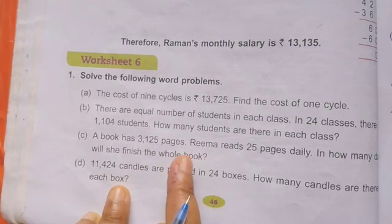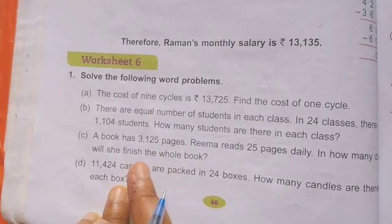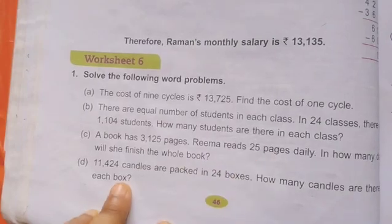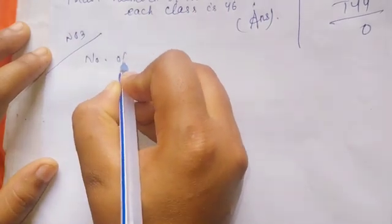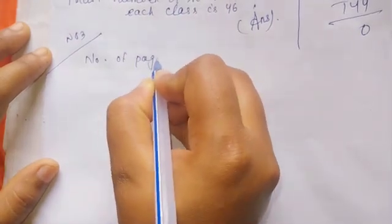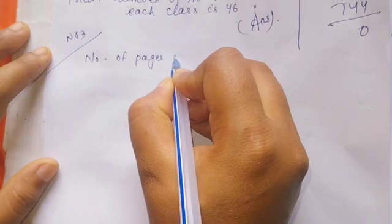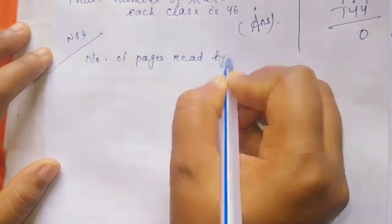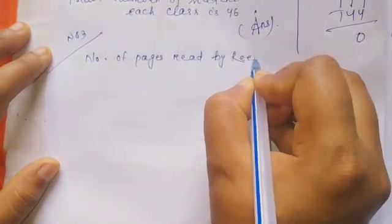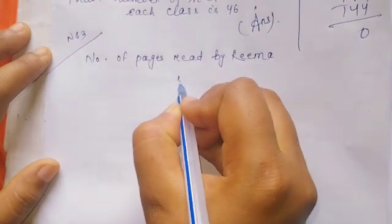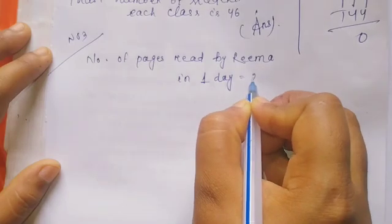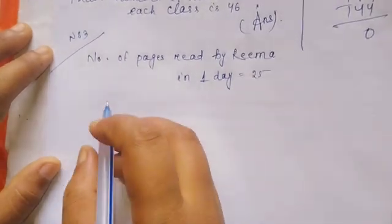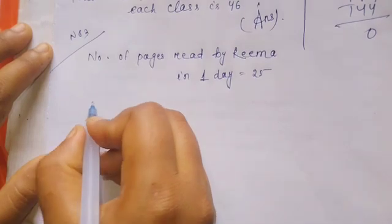Now write: Number of pages read by Rima in one day equals 25. Then number of days required by Rima to finish the book equals 3,125 divided by 25.